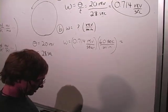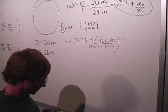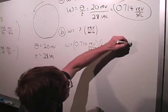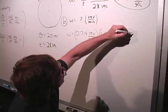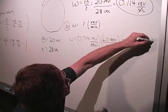It's going to be kind of tiny. That's going to be 0 point, the three sig figs, 0.119 revolutions.